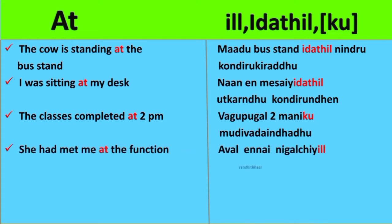The fourth example is: 'She had met me at the function.' In Tamil: Awal yen nai nikal chiyil sandi thal. Awal means she, yen nai means me, nikal chiyil means 'at the function', and sandi thal means 'had met'. Here we are specifying a particular moment or event, so we are using 'il' in Tamil.